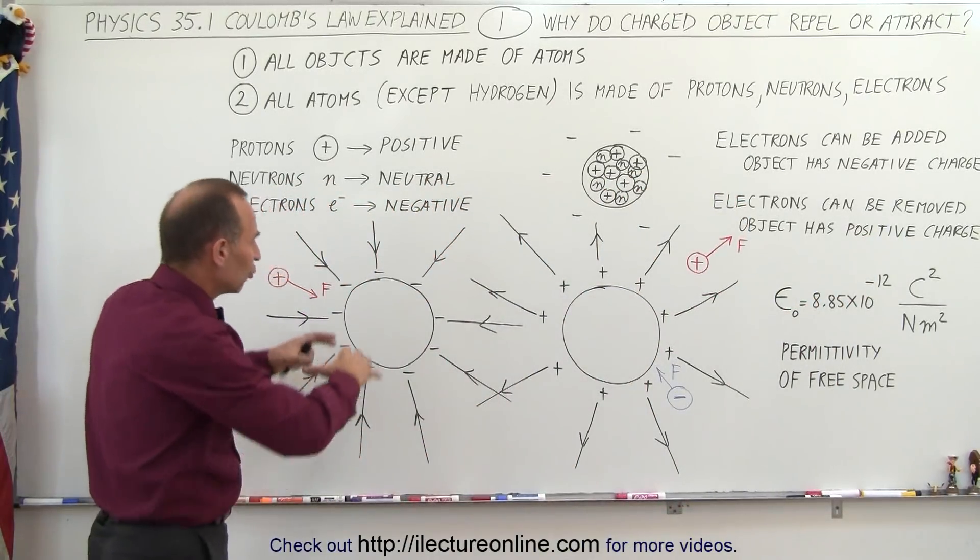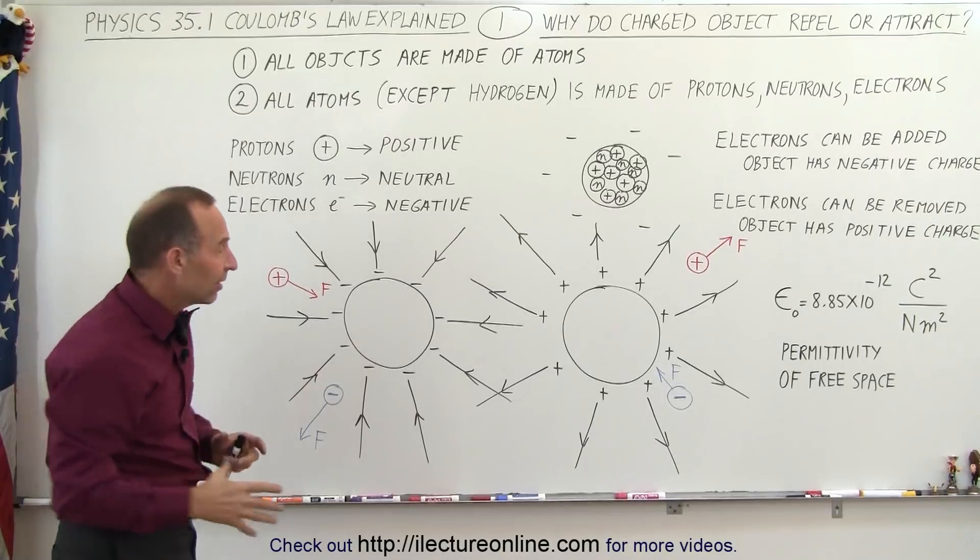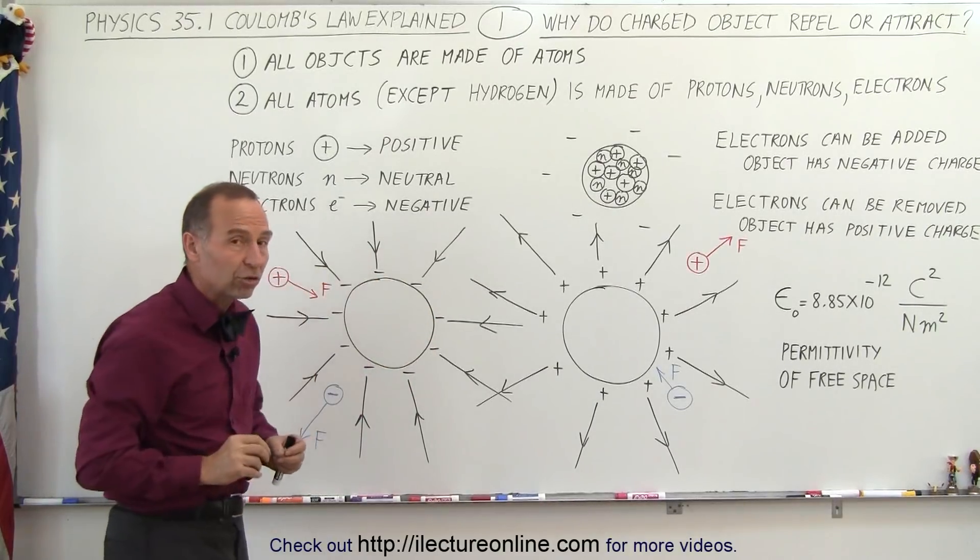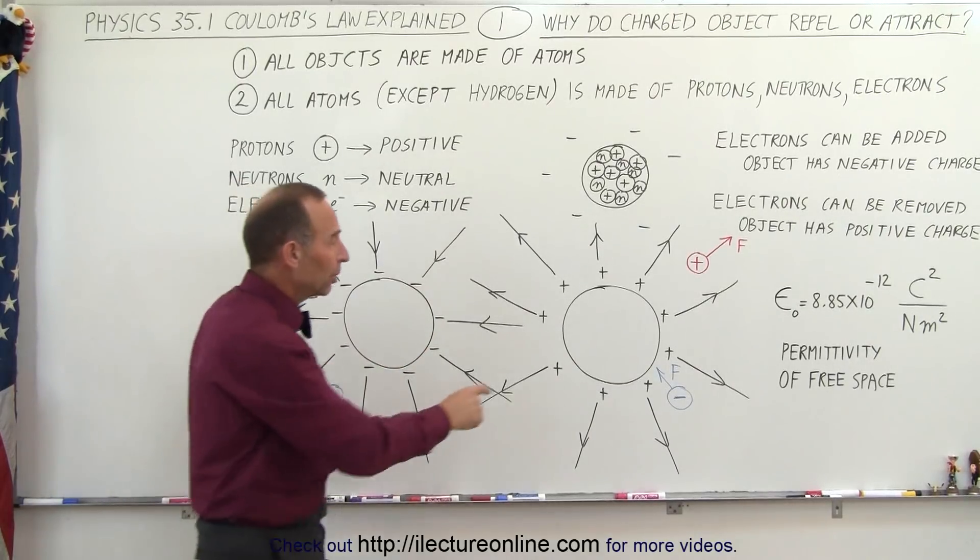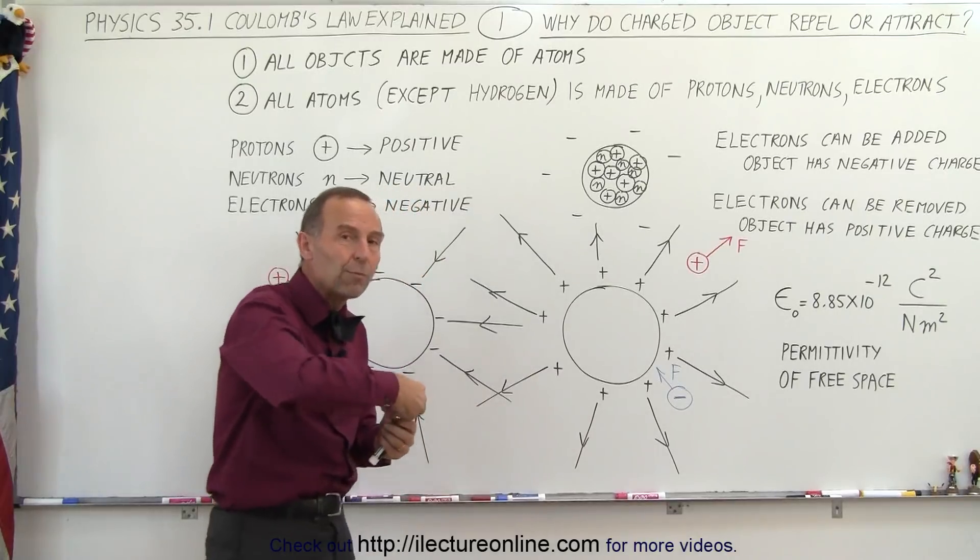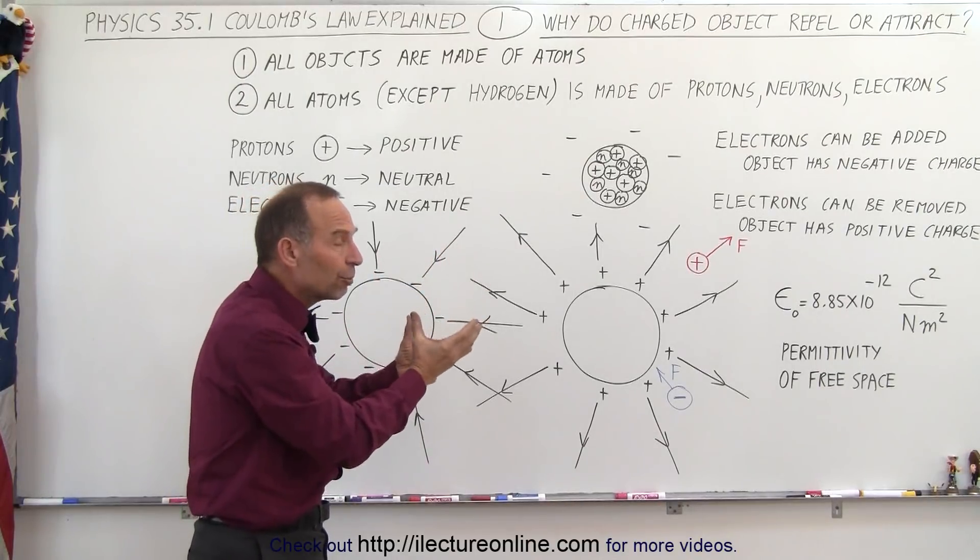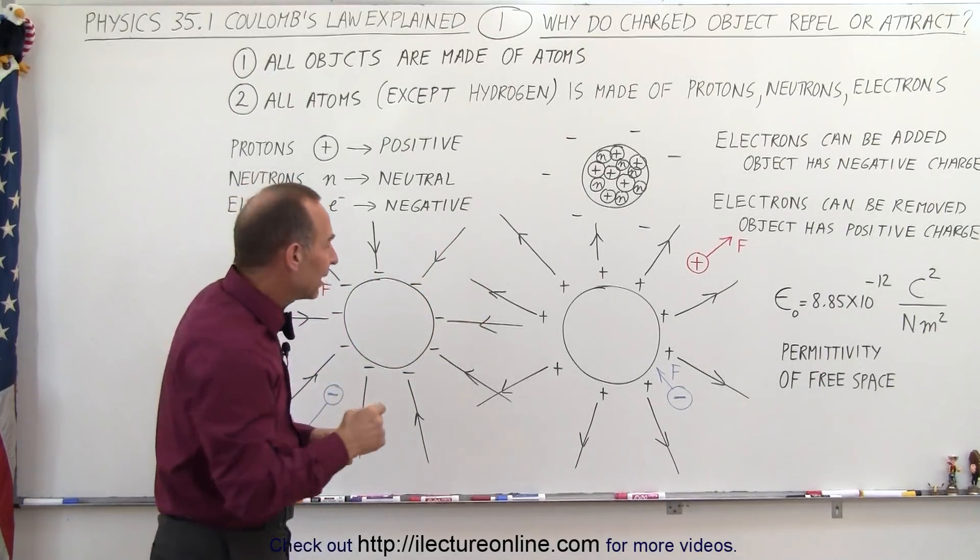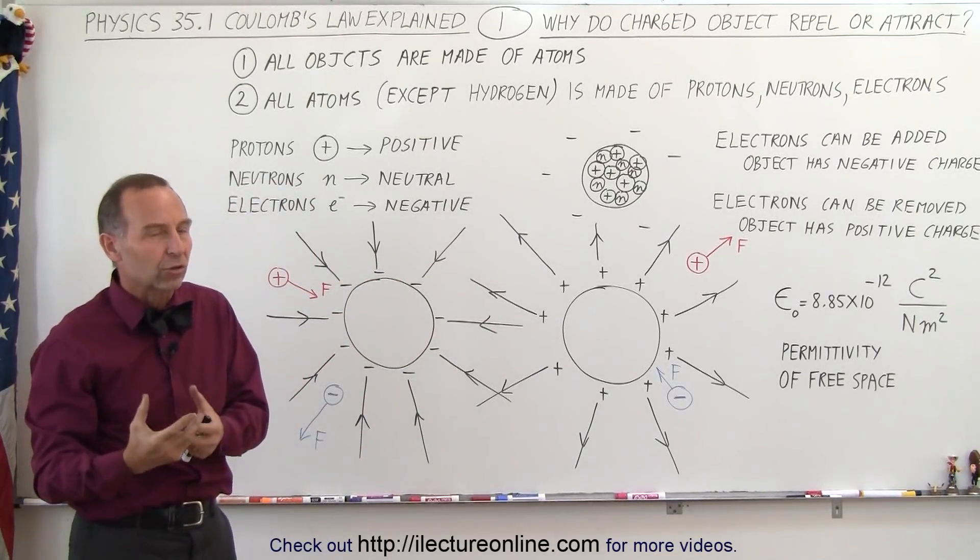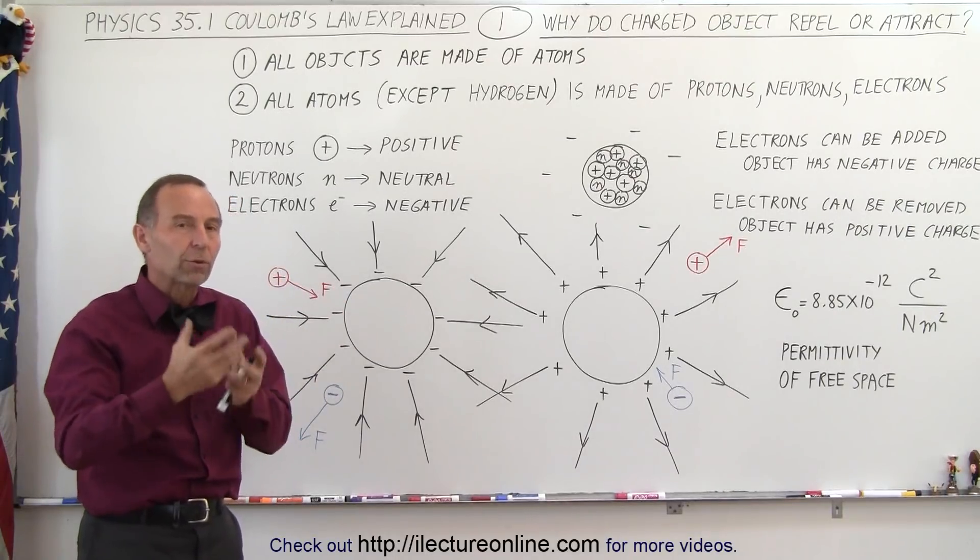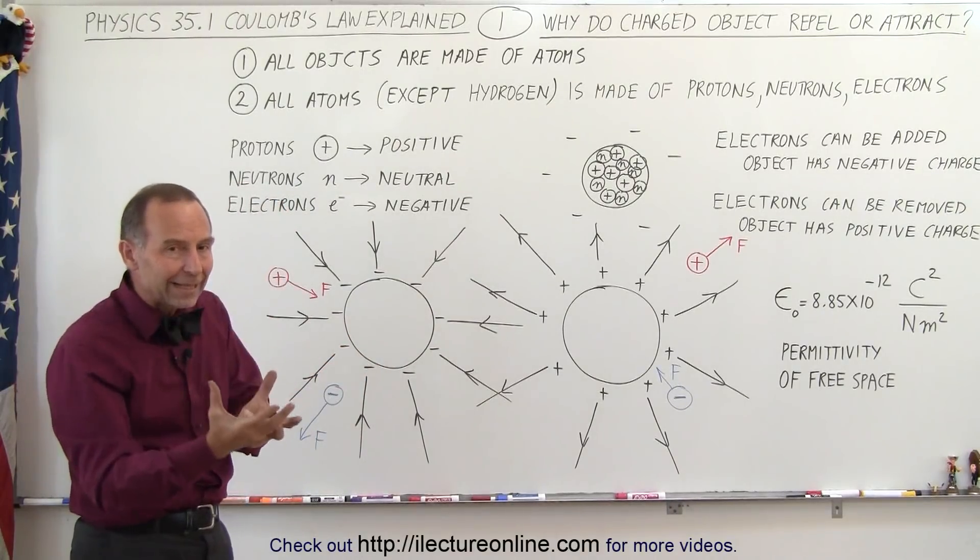So we can denote that by drawing an object, a random object, and by putting negative signs around it, what this indicates is that it has more negative charges than positive charges and therefore the whole object becomes negatively charged. Here by putting little pluses around it, we can indicate that we've removed some electrons and therefore there's more protons than electrons in the object and therefore the object becomes positively charged. We typically denote that the charges reside on the surface; that's the case with conductors. If they're insulators then the charge can be distributed throughout the object, but with conductors the excess charges tend to reside near the surface.